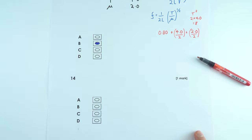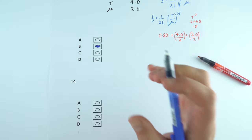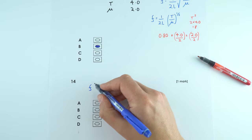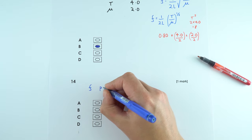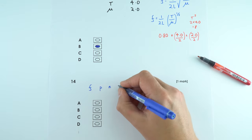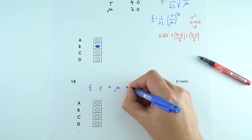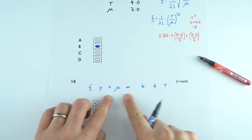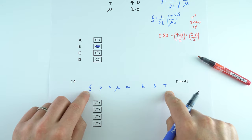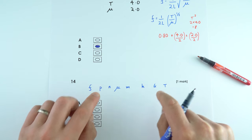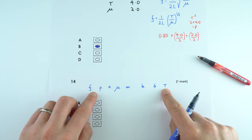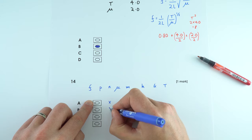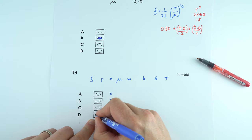Question 14: ordering prefixes of increasing magnitude. Femto = 10⁻¹⁵, pico = 10⁻¹², nano = 10⁻⁹, micro, milli, kilo, giga, tera. You must know these. By working through the options using this knowledge and a process of elimination, the correct answer is D.